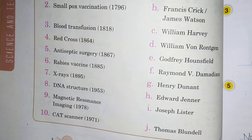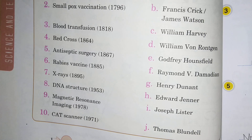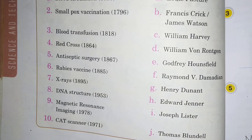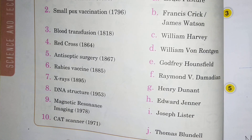DNA structure ki khus kis nai ki thi 1953 mein? That is option B, Francis Crick aur James Watson. Dono nai mil kar ki thi.